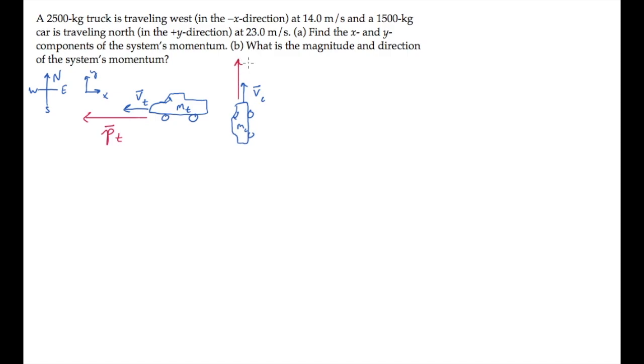We are asked in Part A to find the x and y components of the system's momentum. The system is the sum of the truck and the car, so the system's momentum, capital P, equals the sum of the truck's momentum plus the car's momentum. That's mass times velocity, each for the truck and for the car.